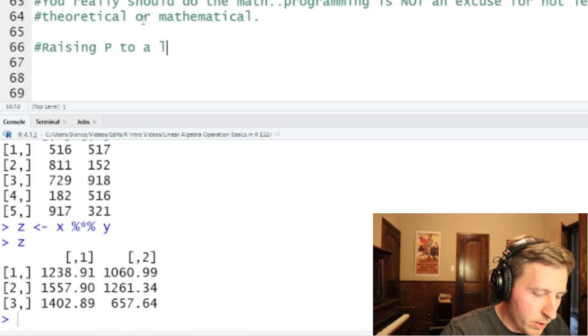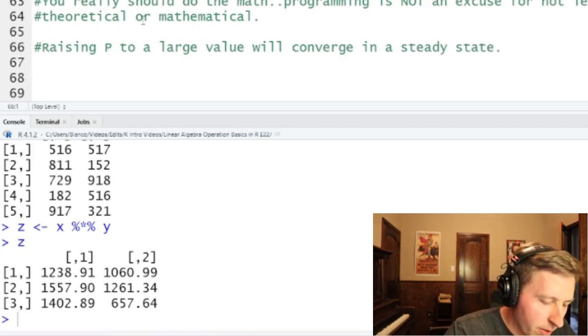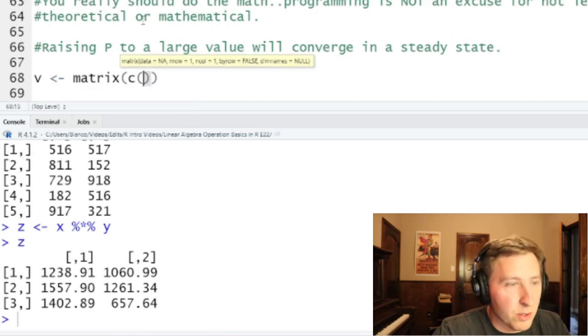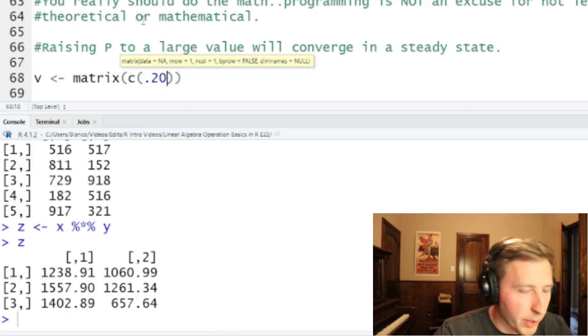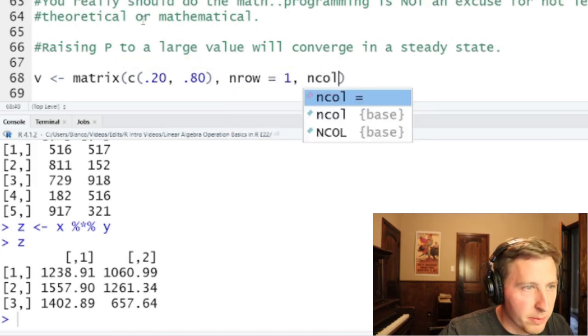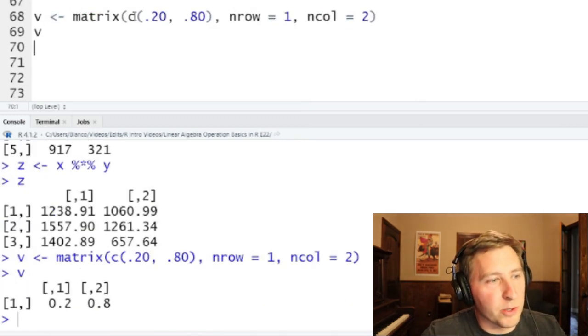So raising p to a large value will converge in a steady state. And so a quick example of this is going to be v, which is going to be that initial state here. And we're going to create a matrix just as we've been talking about. And we're going to set this to 20%, so 0.2 and 80%. So these have to add up to one to be a Markov here with probability theory, because our probabilities need to add to one. And we're going to have our n rows equal one and our n columns equal two. We'll run that and I can print that out if you're curious what that looks like.